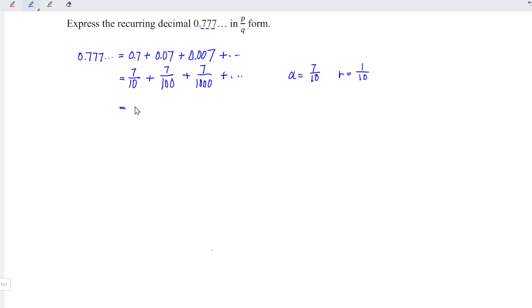So we have the formula sum to infinity is equal to a divided by 1 minus r. So we have 7 divided by 10 over 1 minus 1 over 10. Let's expand the denominator part. So we have 7 over 10 divided by 1 is simply 10 over 10, so we have 10 minus 1 divided by 10.